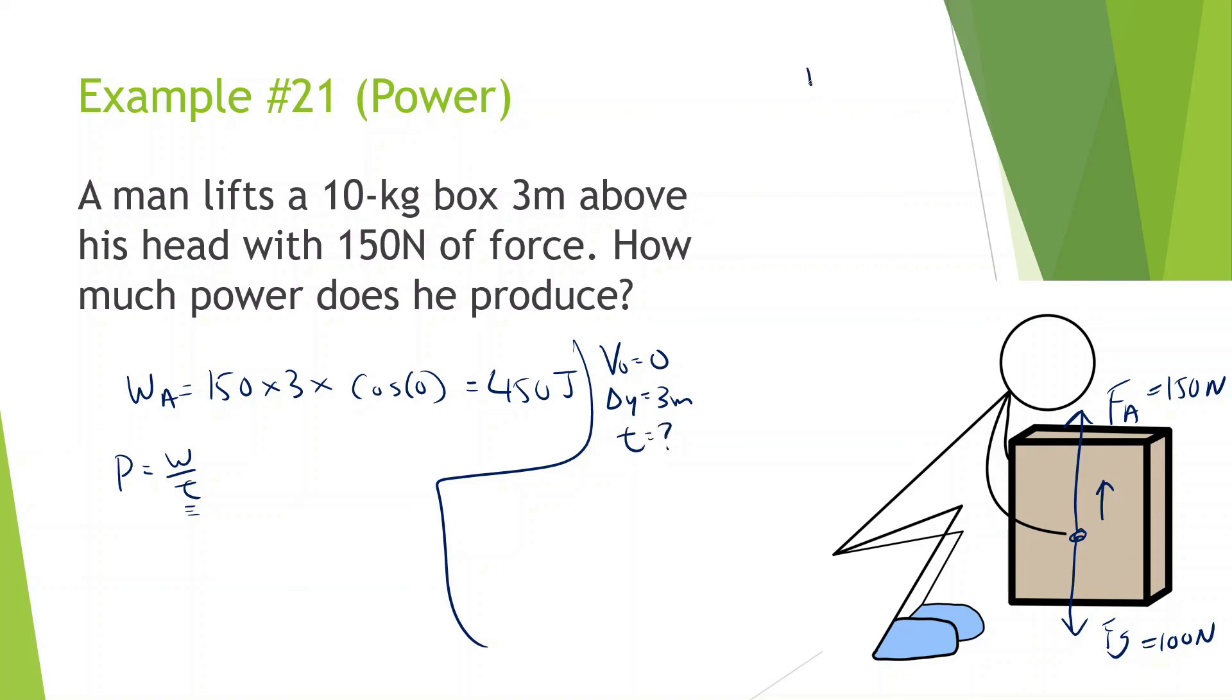So we need to find acceleration. I'm going to find the acceleration doing the sum of all forces in the y equals mass times acceleration of y. So force applied 150 minus force of gravity 100 is equal to the mass 10 times acceleration. And then we can do 50 divided by 10, so 5 meters per second squared.